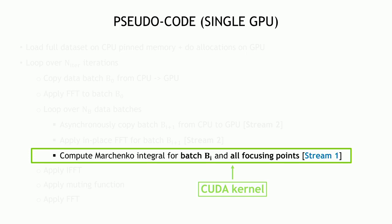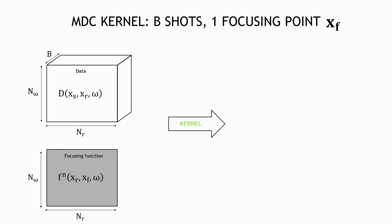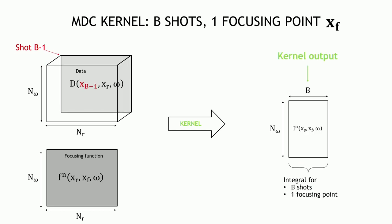Now diving into kernel optimization — this is where the second level of parallelism occurs. The CUDA kernel computes the Marchenko integral for one batch of shots and all focusing points, processing one focusing point at a time via a loop. The kernel takes two inputs: the data with B shots and the focusing function as a 2D array for one focusing point. Each shot produces one output trace, so the kernel output is a 2D array of shape (number of frequencies) × B shots.